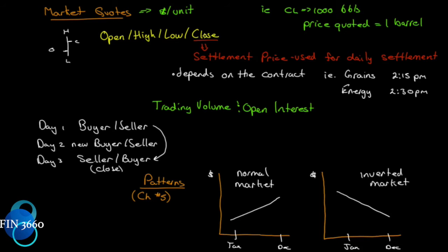Sometimes trading doesn't stop on the close. The settlement time depends on the contract. For instance, the grains close at 2:15 — whatever the last trade is at 2:15 sharp is the settlement price. It also happens that grains stop trading at 2:15, so at 2:15 and one second, that's it — it's over.